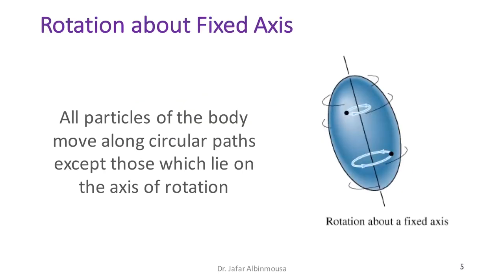For rotation about a fixed axis, we have an axis of rotation here. This is different from what we considered in previous chapters — there, we dealt with particles and spin was ignored. But in a rigid body, we have an axis of rotation. What is interesting is that if you pick any point on the body and follow its trajectory, that trajectory is going to be a uniform circle, as we are going to see next.